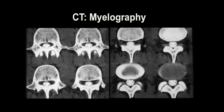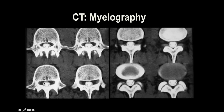Another use for CT is myelography. Since we're not usually able to evaluate the canal directly due to lack of contrast difference, we can administer contrast into the spinal canal. Everything bright that you see represents the spinal canal. We're pretty low here, so what we're seeing are the nerve roots or cauda equina. You can see a disc here and bone here, but what we're really assessing is the morphology of the canal at all levels. It looks pretty good on these, but you can see some narrowing and blunting of the shape compared to other levels.